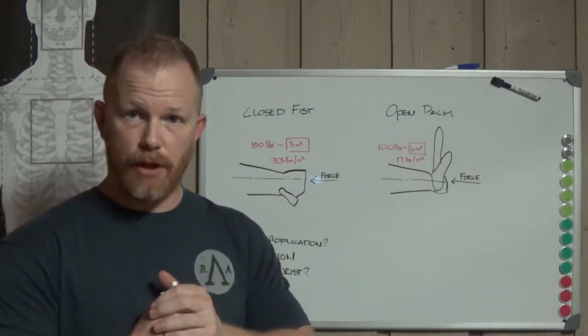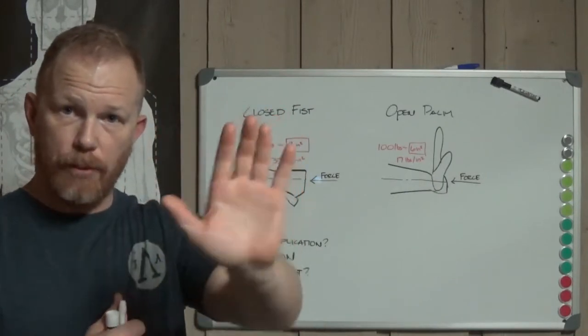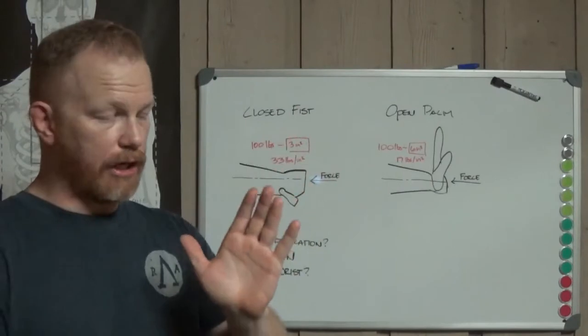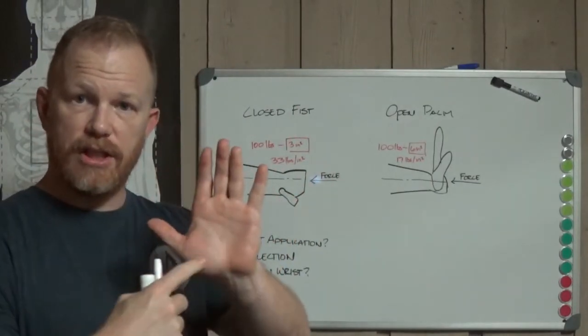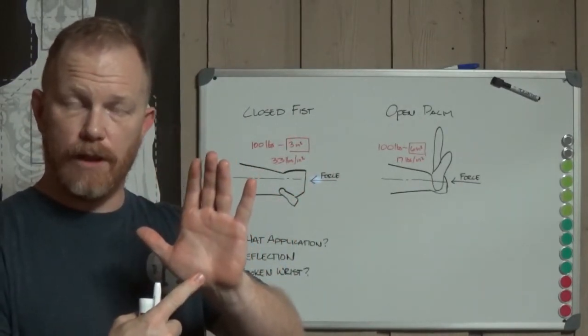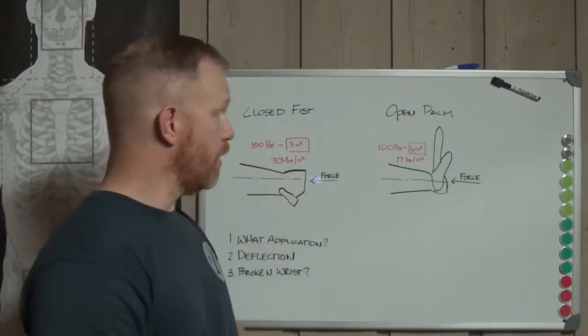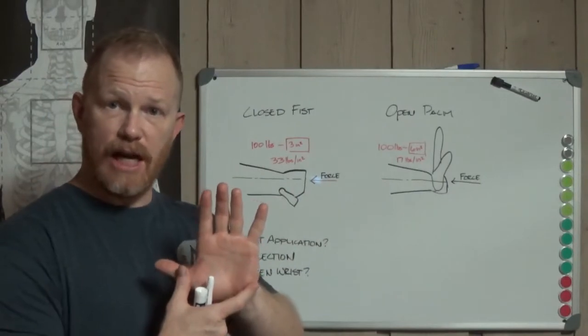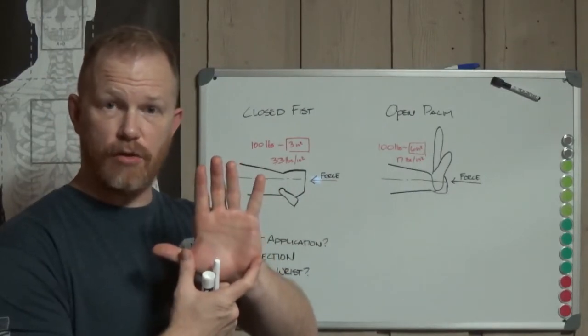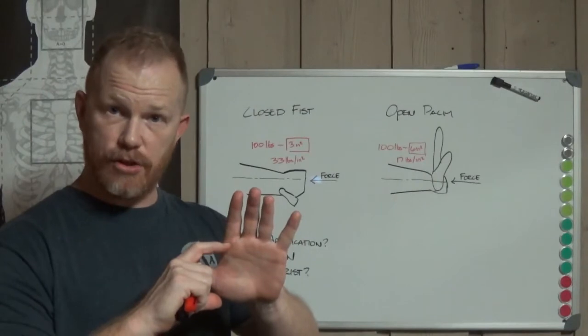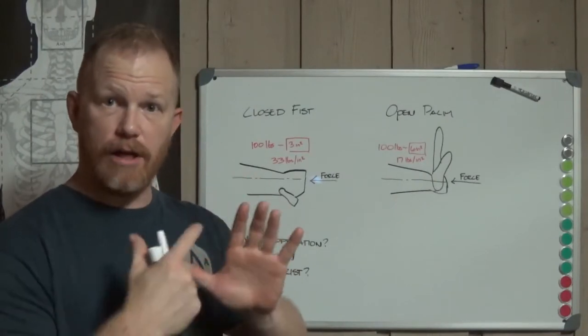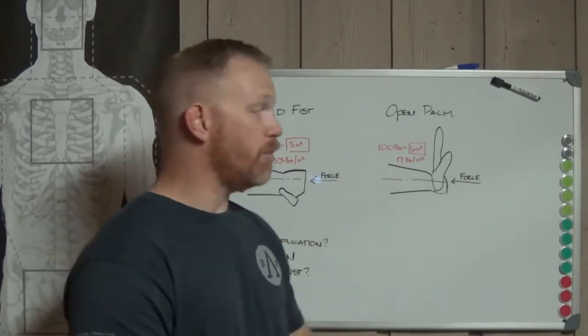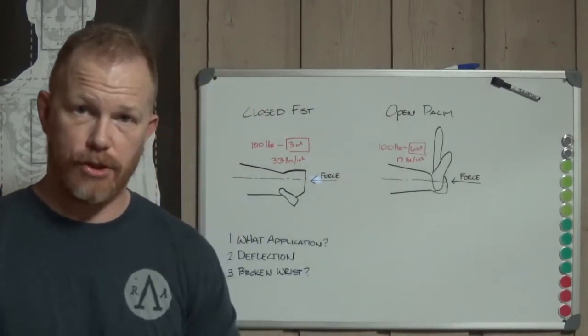Now, you're going to do that same punch but with a palm heel strike. The area is significantly larger through which that blow gets delivered. If we take that same area, let's say three inches across by two inches, now we've got six square inches of area through which that same amount of force is delivered. That comes out to about 17 pounds per square inch.